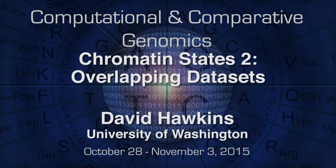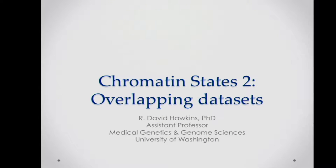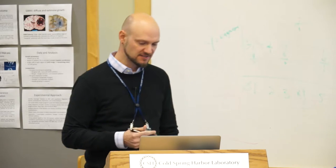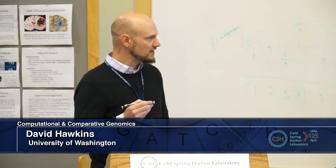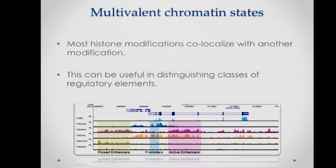Today's topic is overlapping data sets. I'm going to tell you two stories from the lab to drive home this point of overlapping data sets. As we began discussing yesterday, when you generate a bunch of ChIP-seq data, especially if you work with epigenetic modifications, histone modifications, or even transcription factors like Ross was showing you, you often want to ask when do they co-localize — to define an active versus a poised enhancer, or an active versus a poised or bivalent promoter.